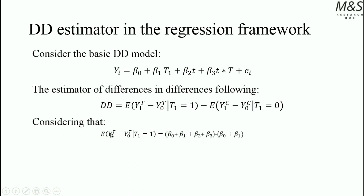Let's analyze by time periods. In time period 1 (post-intervention), the time dummy variable equals 1, the treatment effect equals 1, so we retain β₀ + β₁ + β₂ + β₃. Subtracting the pre-intervention period where the time dummy equals 0, β₂ cancels and β₃ cancels, leaving β₀ + β₁. So the difference for the treated group over time yields β₁ + β₂ + β₃.